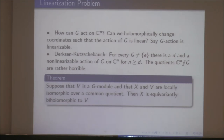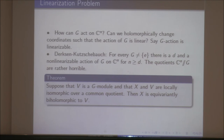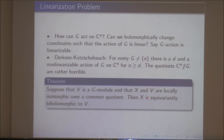We can apply all of this to get the following theorem. Suppose P is a G-module and X is a Stein G-manifold locally isomorphic to P over a common quotient P//G. Then X is equivariantly biholomorphic to P. Notice I don't need any topological assumptions — the reason is that C^N is contractible, which obviates the need for topological conditions. The genericity condition was handled by the later theorem — in our paper you'll find this theorem for P generic, but in fact you don't need it.